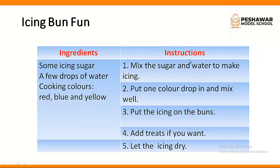How are we going to prepare the icing? First, mix the sugar and water to make icing. Put one color drop in and mix well. First of all, you have to mix sugar and water to make the icing. Then you have to add the color — which color would you like? Red, blue, yellow, or any other color. Add one drop of color and mix well. Then put the icing on the buns — put that prepared icing on the buns. Add treats if you want; treats might be jellies, buttons, or chocolates.